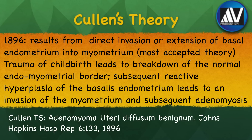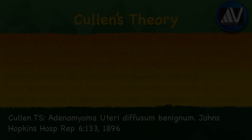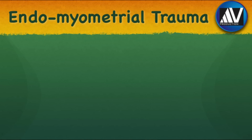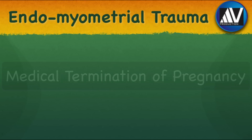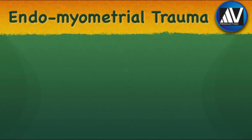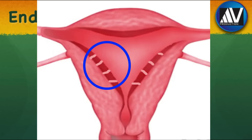Cullen suggested that adenomyosis results from direct invasion or extension of the basal endometrium into the myometrium, occurring during normal delivery. Trauma of childbirth leads to breakdown of the normal endomyometrial border and subsequent reactive hyperplasia of the basalis endometrium, leading to invasion of the myometrium and subsequent adenomyosis. Today we know that the main initiating factor is endomyometrial trauma, which can occur during normal delivery, caesarean delivery, medical termination of pregnancy, and myomectomy.